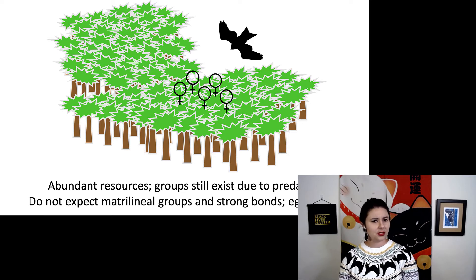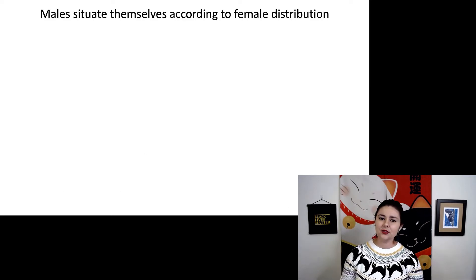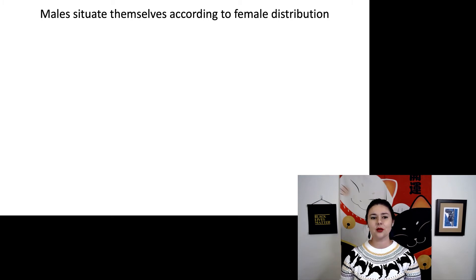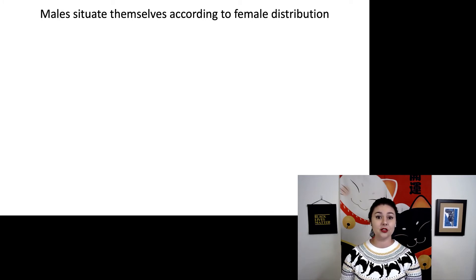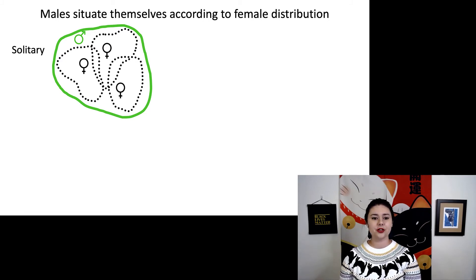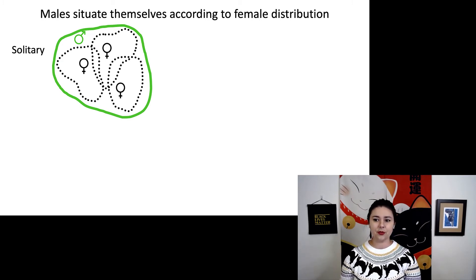But right now we've only talked about the females. Males do something different. Males will tend to situate themselves according to the female distribution. When we get to sexual selection, we'll talk about how females are primarily limited by food, but males are limited by females and how many children they can have. If the females are distributed apart from each other, males will be solitary but tend to overlap their distribution with multiple females.